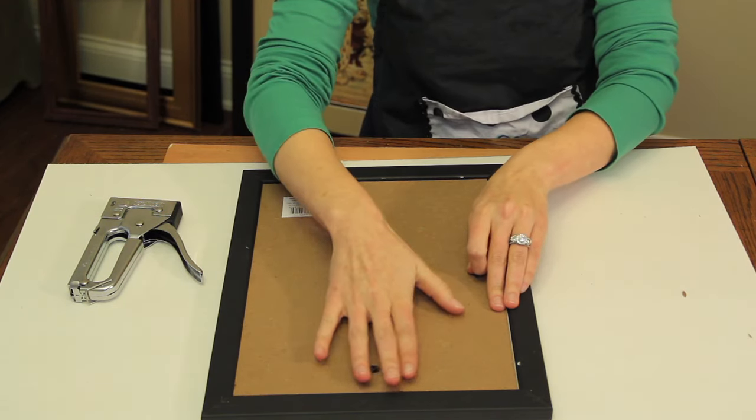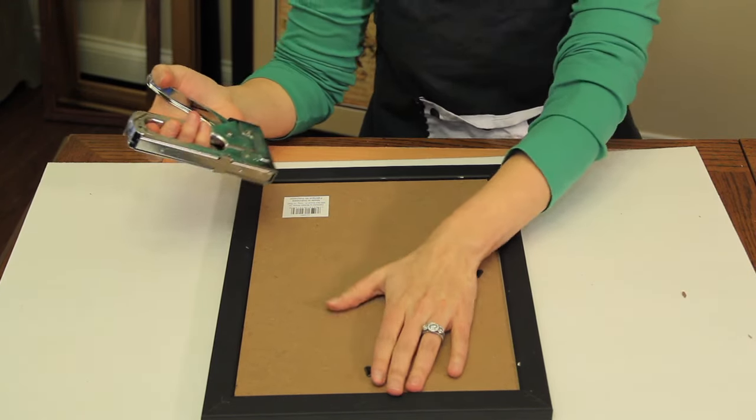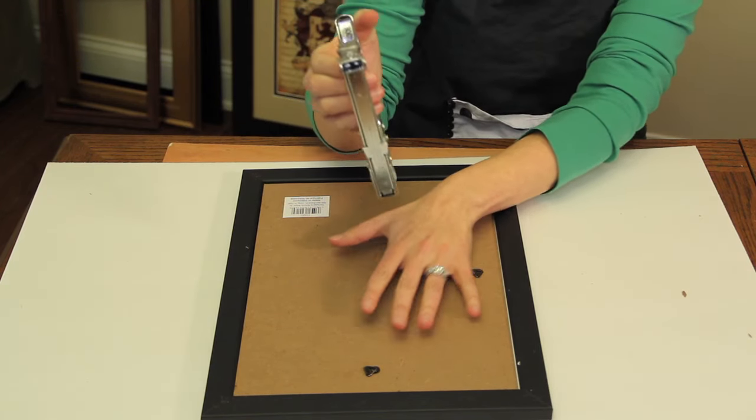If your backer becomes loose or apart from your frame, you simply slide your backer in, make sure it is secure with your hand.